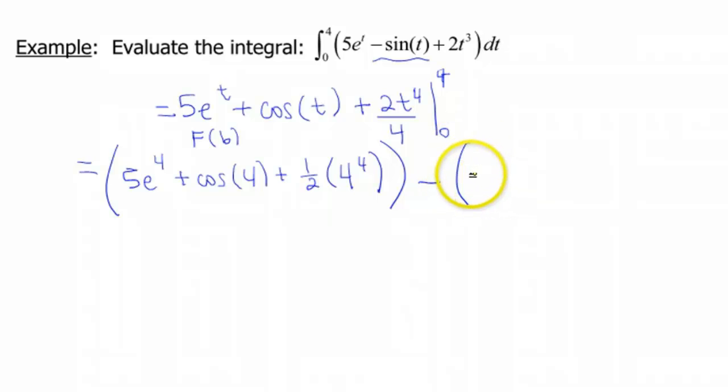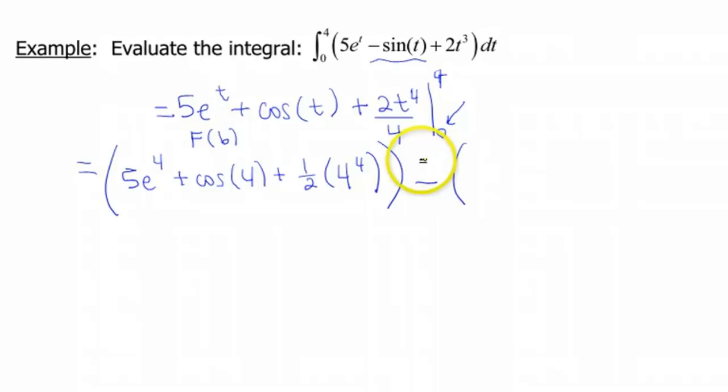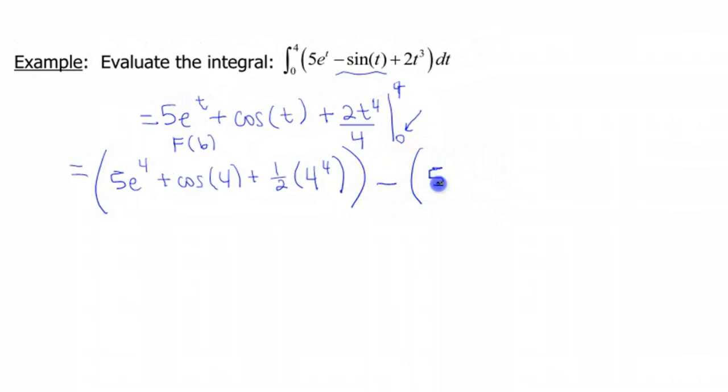Now we gotta do the same thing with 0. And some of you may just try to plug in 0 and think, oh, we're gonna get 0, not necessarily. So if I plug in 0, I'm gonna have 5e to the 0 plus cosine of 0 plus 1 half times 0 to the fourth.